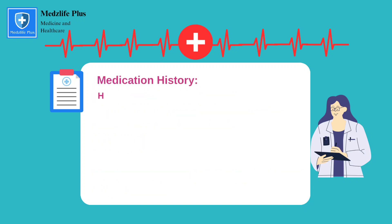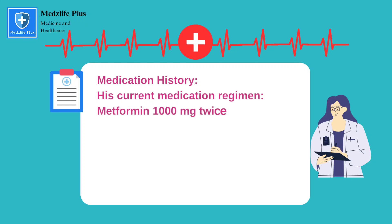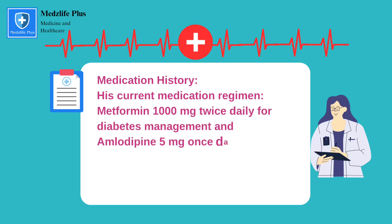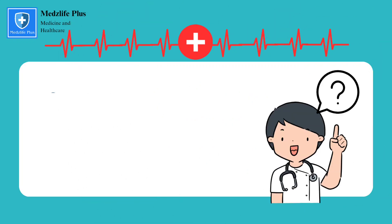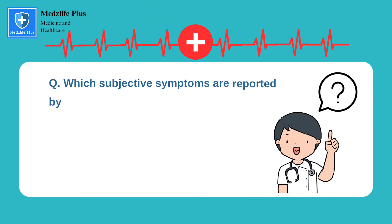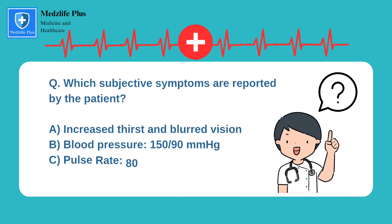Medication history: his current medication regimen includes metformin 1,000 mg twice daily for diabetes management and amlodipine 5 mg once daily for hypertension control. He has been on this regimen for the past two years. Question number 1: which subjective symptoms are reported by the patient?